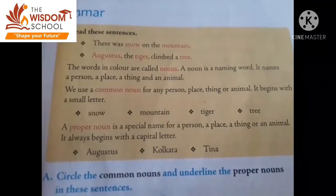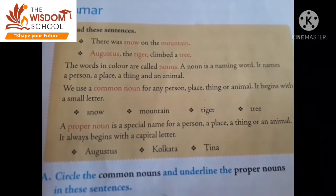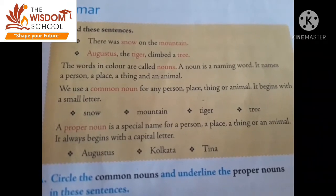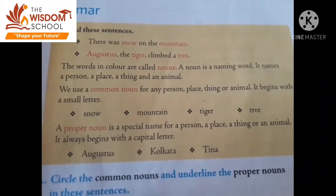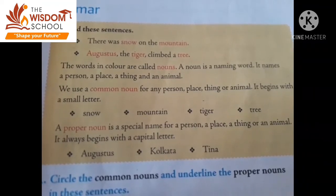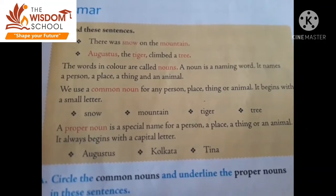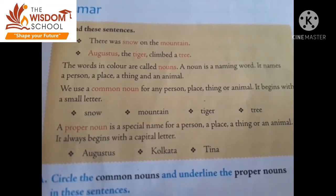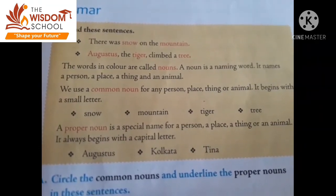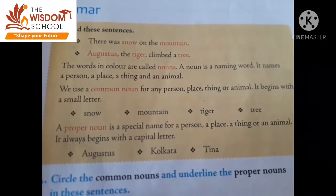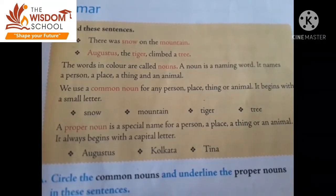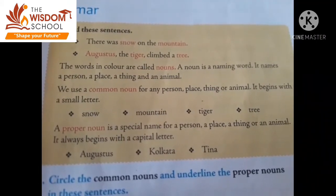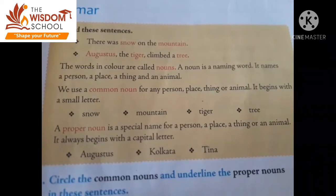And a proper noun is a special name. Proper noun kya hoti hai? Special name hota hai for a person, place, thing, aur an animal. Kisi bhi person ka, place ka, thing ka aur animal ka jo special name hota hai, wo proper noun hota hai. It always begins with a capital letter — jo proper noun hoti hai, wo hamesha capital letter se start hoti hai. Aur jo common noun hai, wo small letter se start hoti hai.